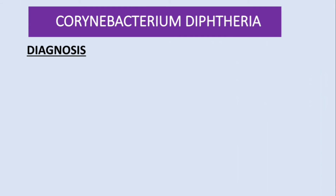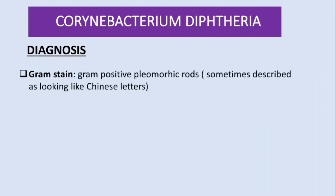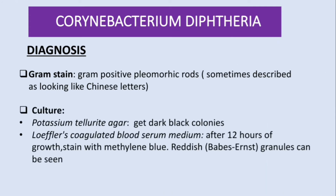For diagnosis, you need to know two main things: gram staining and culture. On gram stain, you will see gram-positive pleomorphic rods, sometimes described as Chinese letters or V and W letter arrangements. On culture, the first medium is potassium tellurite agar — growing this bacteria on this agar produces dark black colonies.